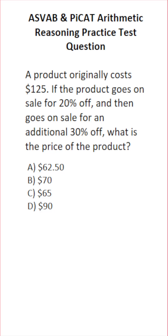Instead, you have to apply these discounts individually. Let's get started with the first discount of 20%. To find the sales price, you're going to take the original price and subtract the original price times the discount amount.